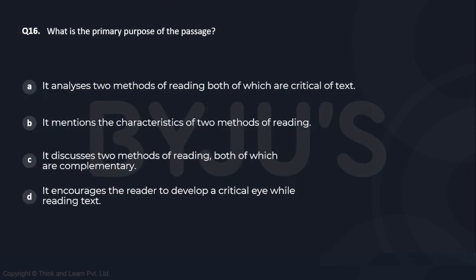Coming to question 16: what is the primary purpose of the passage? This was an easy main idea question. Option B mentions the characteristics of two methods of reading, but it doesn't just mention their characteristics — the author also comments on them and has his own viewpoint. So B is incomplete.